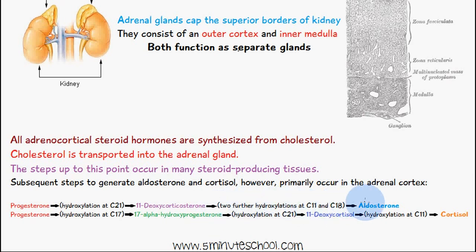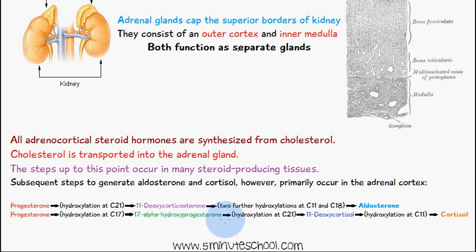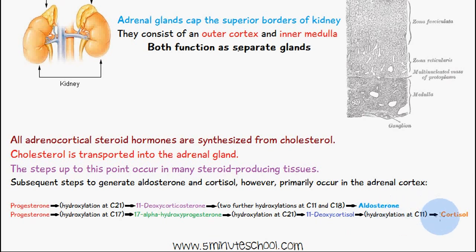For cortisol: we start with progesterone again, then hydroxylation at carbon 17 gives us 17-alpha-hydroxyprogesterone. Hydroxylation at carbon 21 then gives us 11-deoxycortisol, followed by hydroxylation at carbon 11, and finally we end up with cortisol.